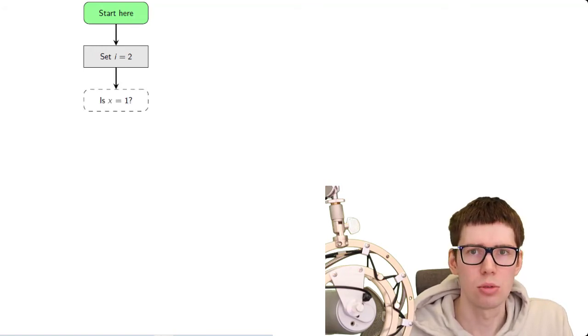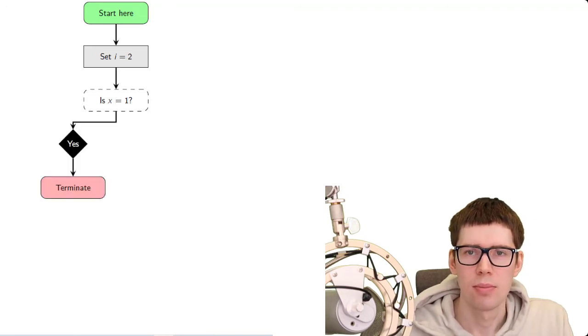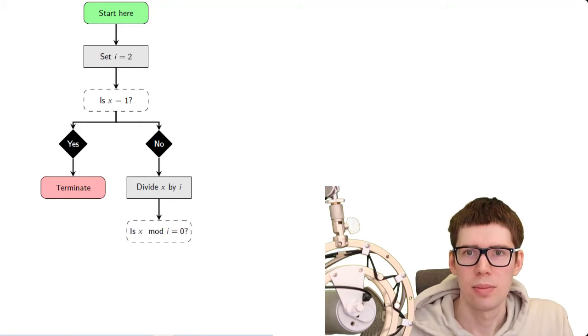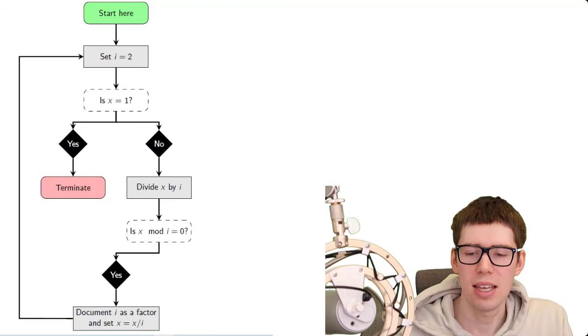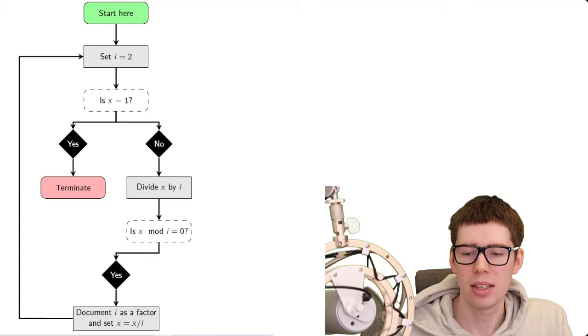Then we ask ourselves, is x equal to 1? If the answer is yes, then we terminate the algorithm. On the other hand, if the answer is no, we divide x by i. And then we ask ourselves, is x divisible by i? And in mathematics, we can do that by asking if x mod i is equal to 0. If that's the case, then that means that i is a factor of x. So we document i as a factor, and we set x equal to x divided by i, and we loop back up to the top of the flowchart where we set i equal to 2.